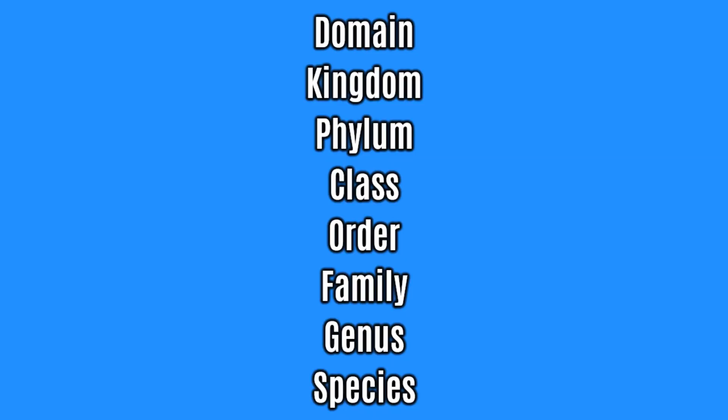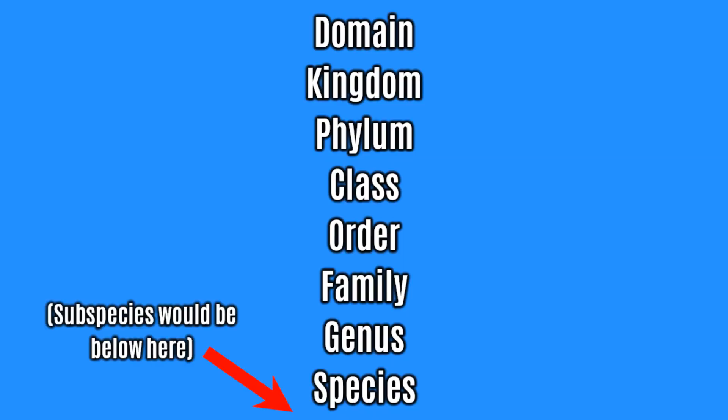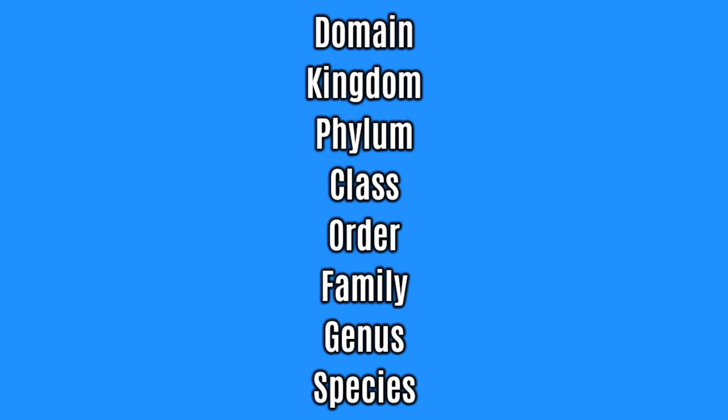By the time you reach rungs as low as species and subspecies on the taxonomic ladder, the problems are rife, as evolution just hasn't had enough time yet to make things appear categorically different to the human observer.